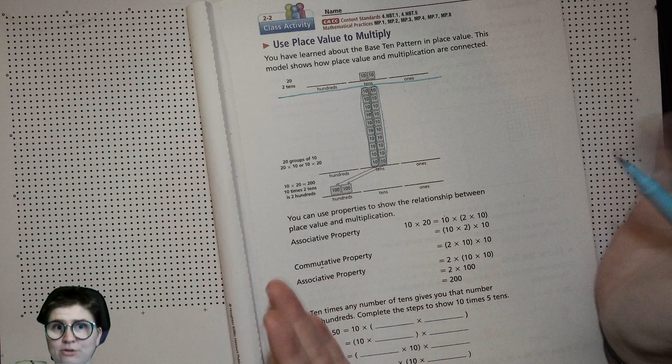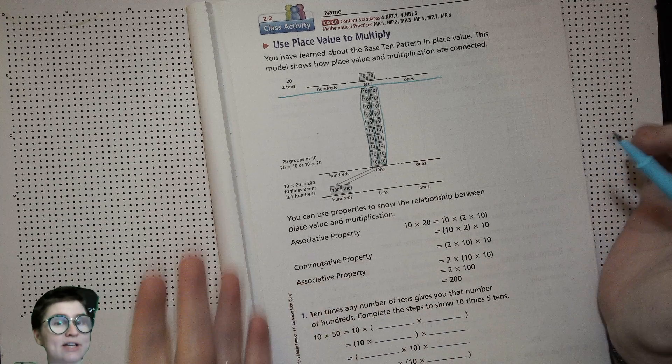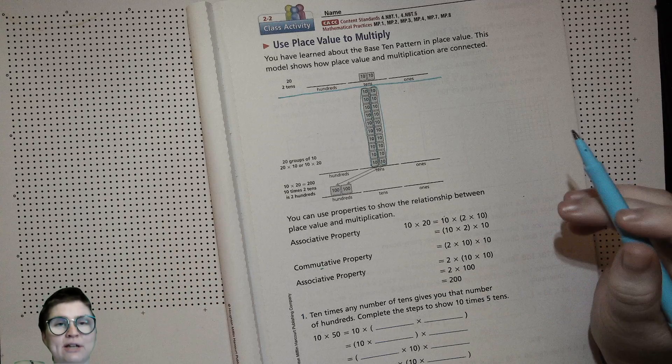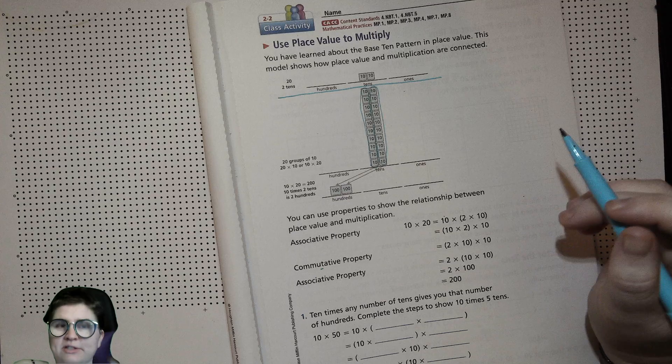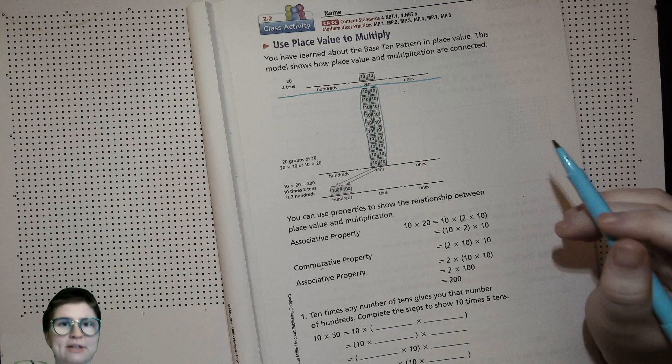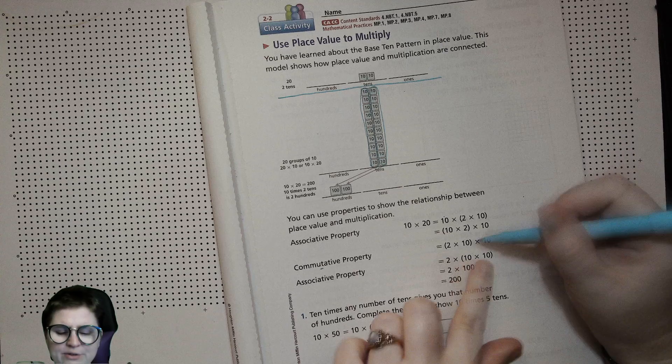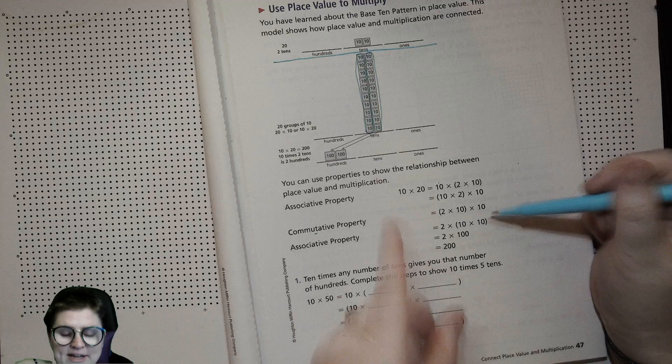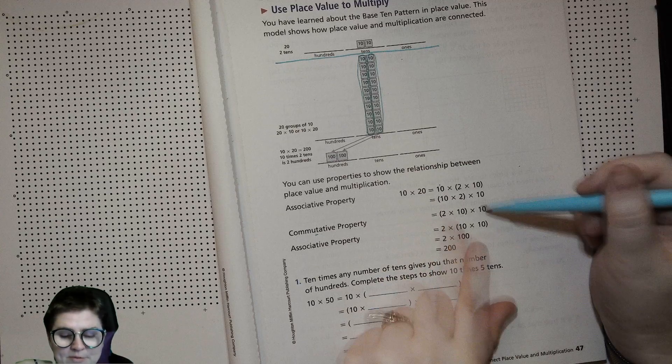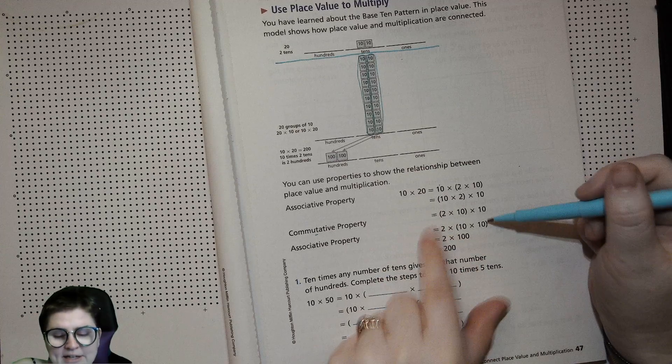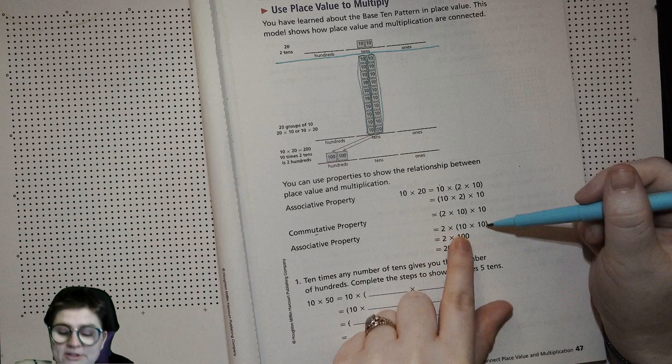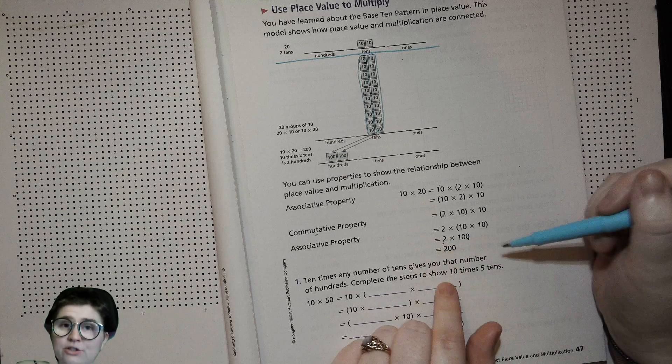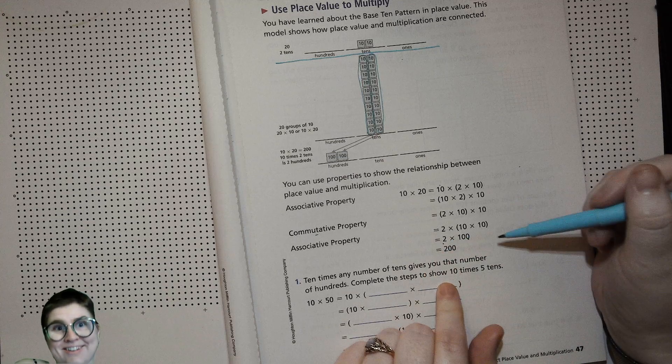Because of the commutative property, you're allowed to rearrange the order of the products as long as all you're using is multiplication. You can rearrange those factors there, and then again with your associative property, you can move those parentheses and do the 10 by 10 first, which you know is 100, and you have 2 times 100 which is 200.